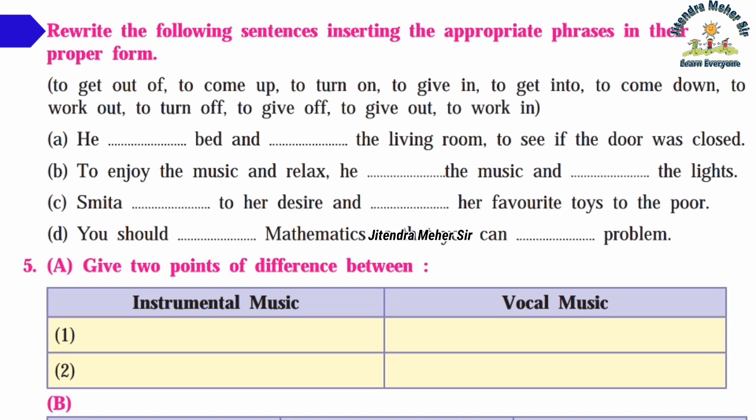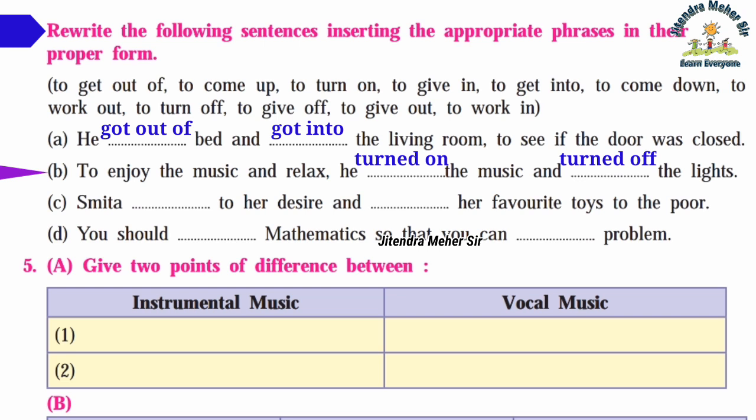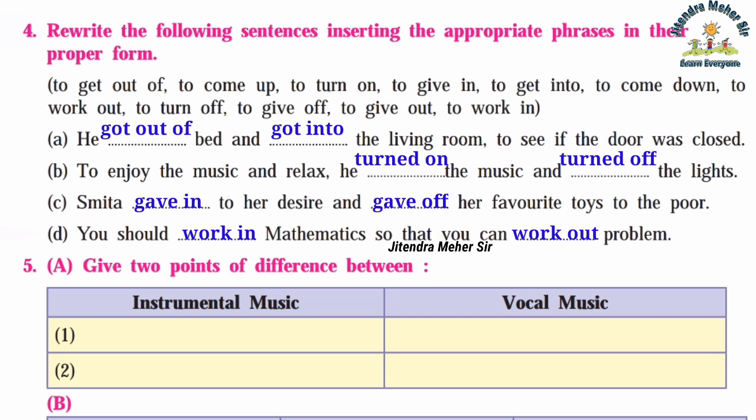Activity four: Rewrite the following sentences inserting appropriate phrases. (a) He got out of bed and went to the living room to see if the door was closed. (b) To enjoy the music and relax, he turned on the music and turned off the lights. (c) Smita gave in to her desire and gave off her favorite toys to the poor. (d) You should study mathematics so that you can work out problems.